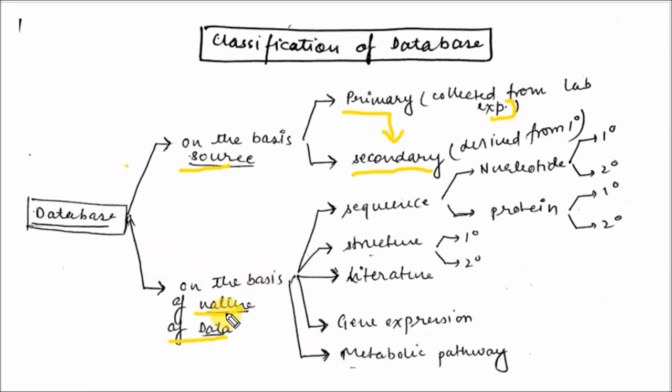On the basis of nature of data, databases can be classified in various parts: sequence database, structure database, literature, gene expression, and metabolic databases. Sequence databases can be nucleotide sequence databases or protein sequence databases.